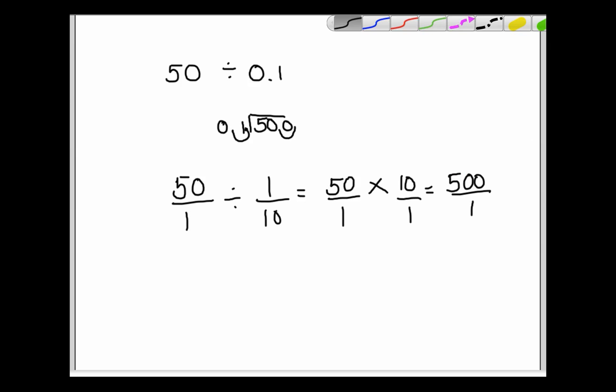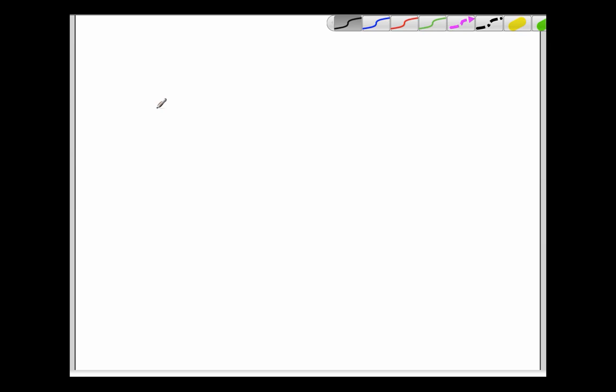The key in dividing by decimals is the same exact thing that you do to make your decimal divisor a whole number. Remember, you have to do the same exact thing to your dividend. I'll give you one more example.